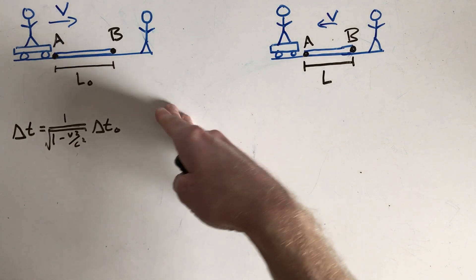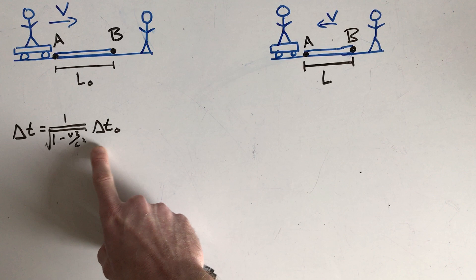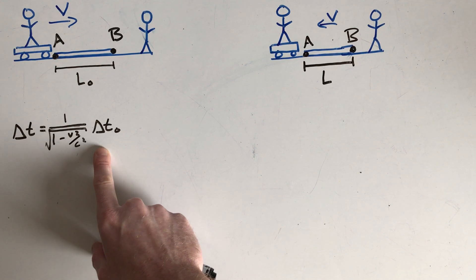But the point of this video is basically to use time dilation, which we derived from the last video, to derive length contraction. And we're gonna do it again just using Einstein's postulates and some simple thought experiments.